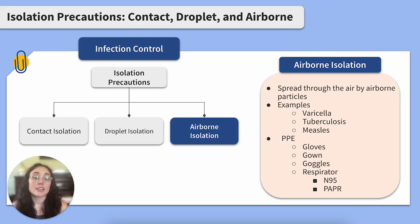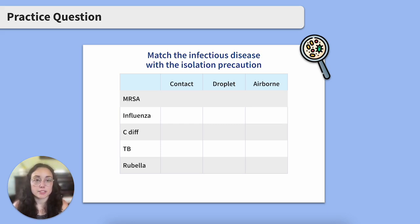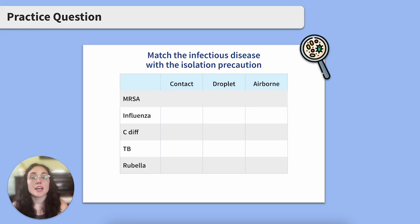Let's try our practice question. This will be a play on the next-gen NCLEX matrix multiple response question. The left column will have an infectious disease and the top row will have different types of isolation precautions. Take a moment to pause here, make your picks, and come back when you're ready.